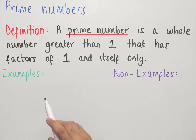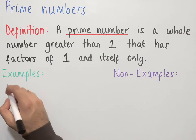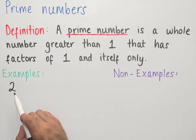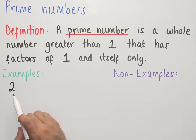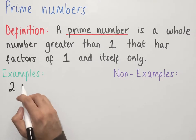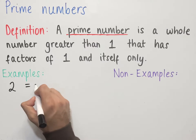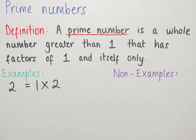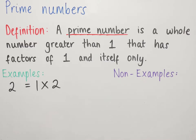Looking at some examples, let's start with the number 2. The number 2 is a prime number since the only factors that 2 has are 1 and 2. The number is also greater than 1 and it's a whole number, therefore it's a prime number. We can also write 2 as 1 multiplied by 2 — there's no other way to multiply two numbers to make 2.